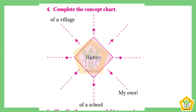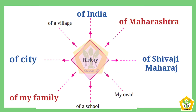Question number four: Complete the concept chart. We have to complete the history chart. The options include: history of a village, history of India, history of Maharashtra, history of Shivaji Maharaj, history of my own life, history of a school, history of my family, and history of a city.